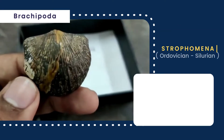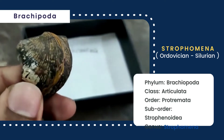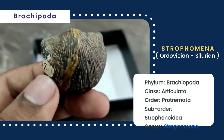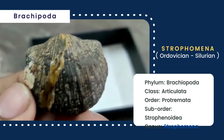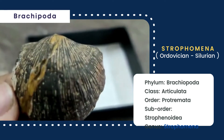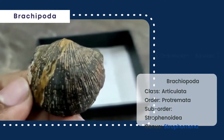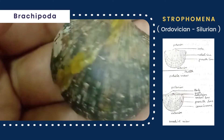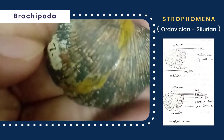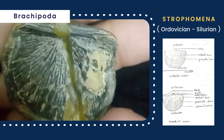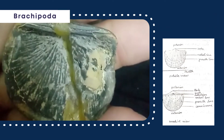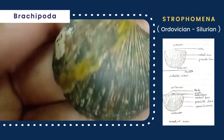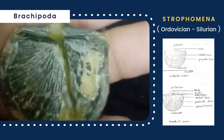Lastly, this is Strophomena. The length of the shell is quite less than the width. The shell is ornamented by growth lines and radial lines; the radial lines are densely located and growth lines are closer to each other. The hinge line is quite long and straight. The shell is characterized by a narrow inter-area which is interrupted by deltidium.